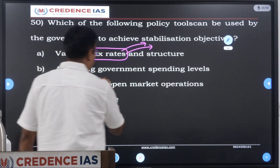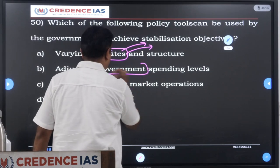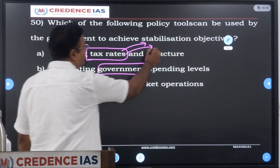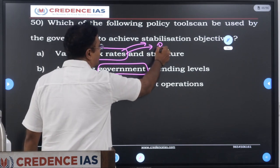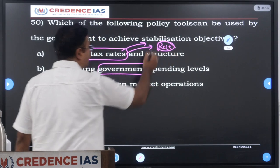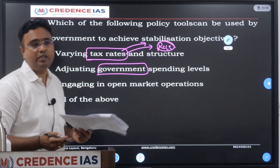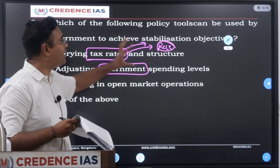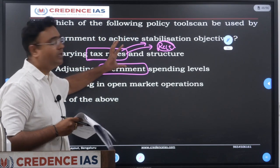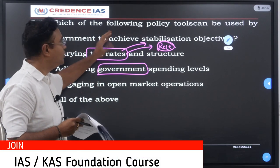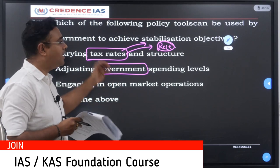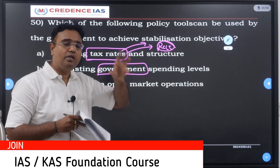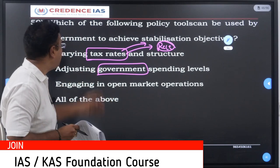So that is there — adjusting the government spending. During recession, the government needs to reduce the tax rates, because at that time people do not have so much money with them. So depending on the economic scenarios, they need to alter the tax structure. To make the economy stabilize, they either need to increase or decrease the tax structure.